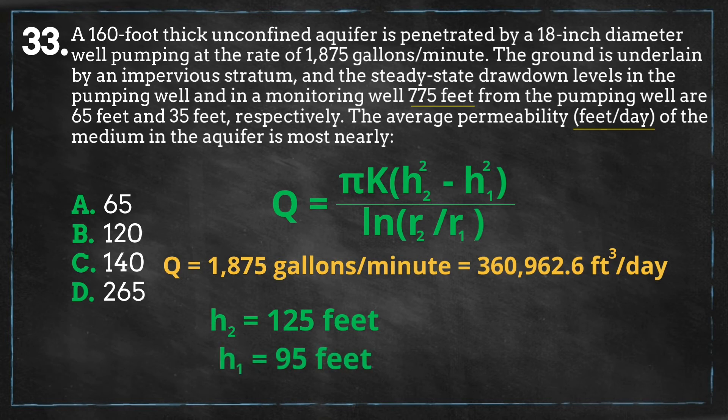R2 is the radius of the pumping well, which is 0.75 feet, and r1 is the distance from the pumping well to the observation well, which is 775 feet.